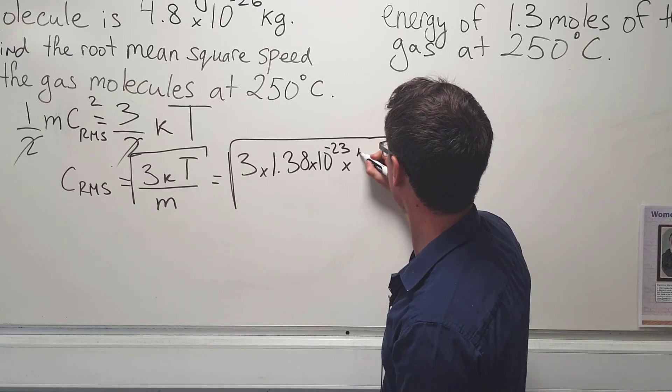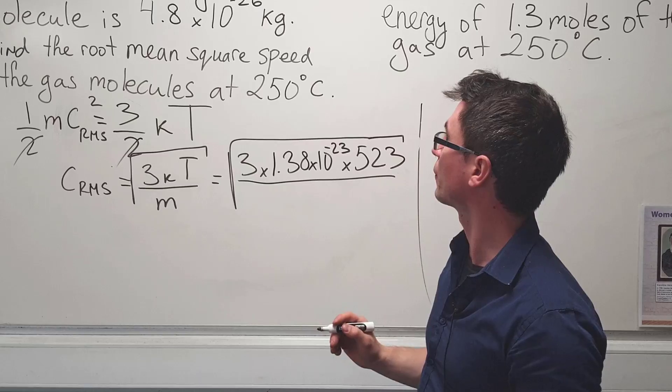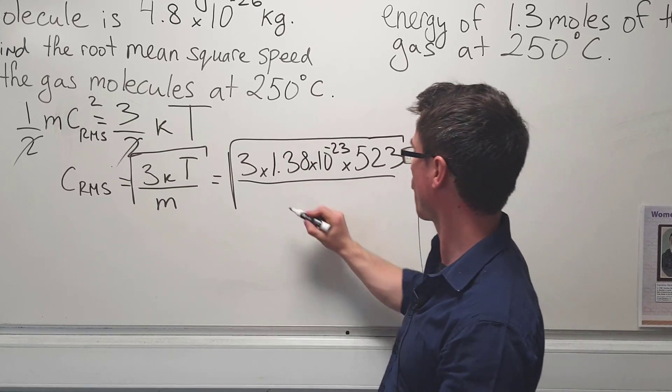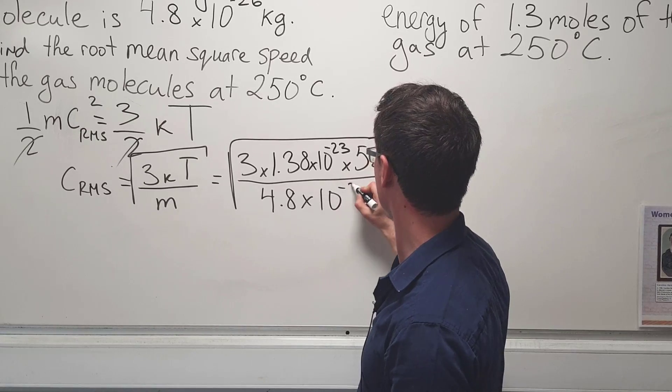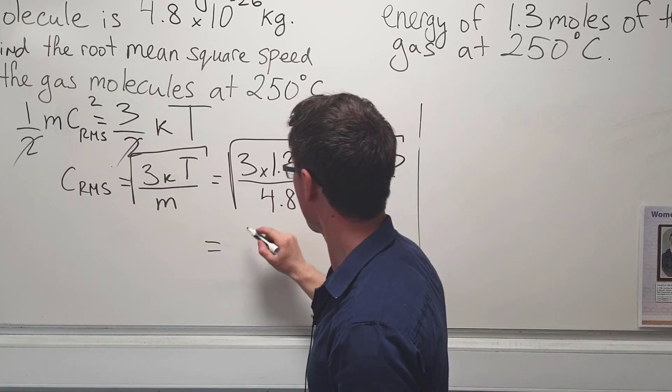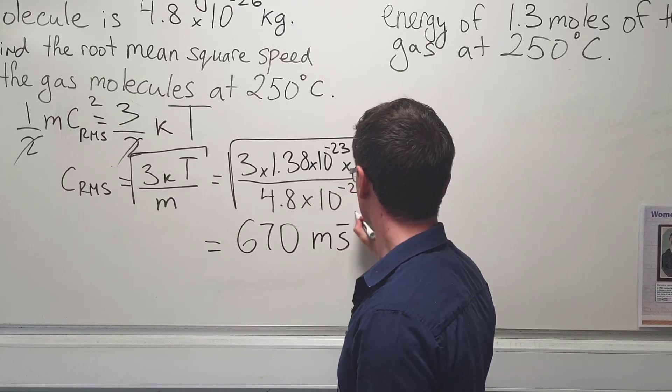just 523, divide that by the mass of a single molecule, which is 4.8 times 10 to the power of minus 26. That's going to give me around 670 meters per second.